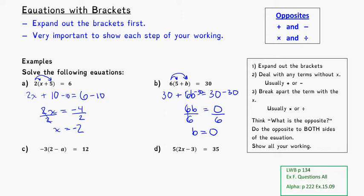And we can check that working if you want. As an example for that, if b is equal to 0, let's double check that that worked. We'll plug it in. 6 bracket 5 plus 0 bracket equals 30. 5 plus 0 is 5. So 6 times 5 is equal to 30. That's true. We've done it correctly.